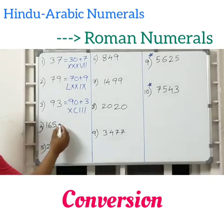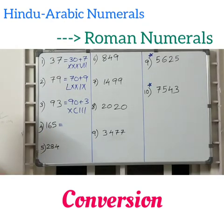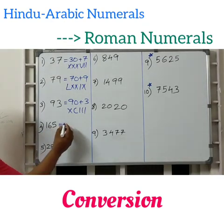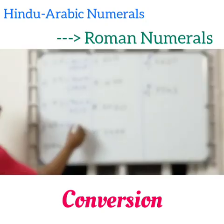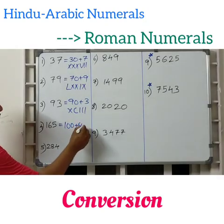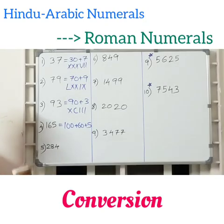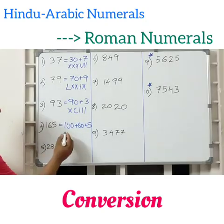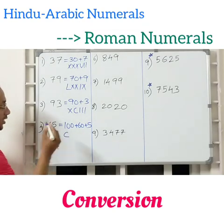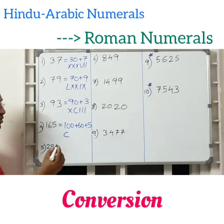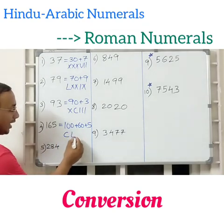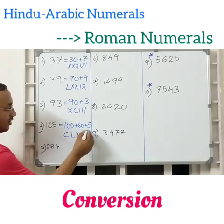Next one, 165. Write it as expanded form: 100 plus 60 plus 5. So 100, you know friends, it is nothing but C. 60 is LX, and 5 is nothing but V.